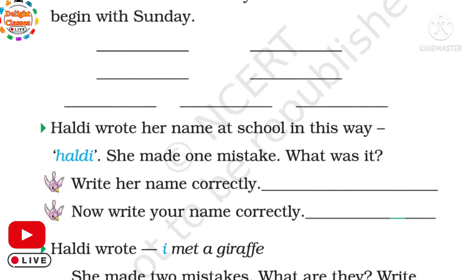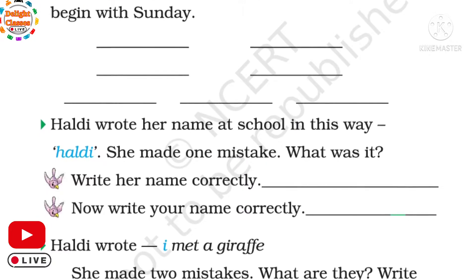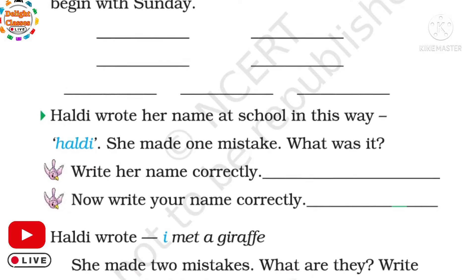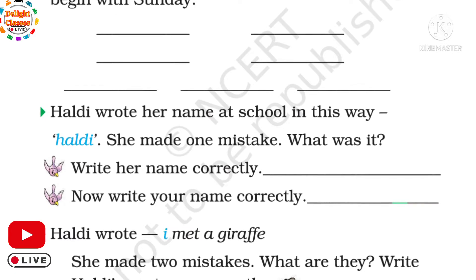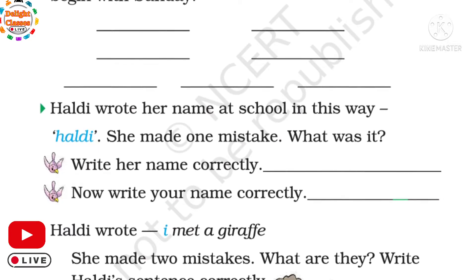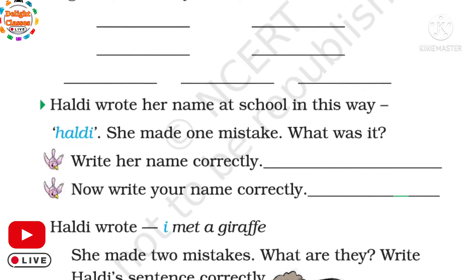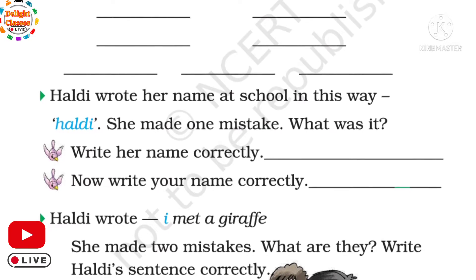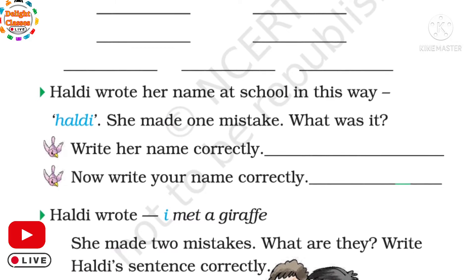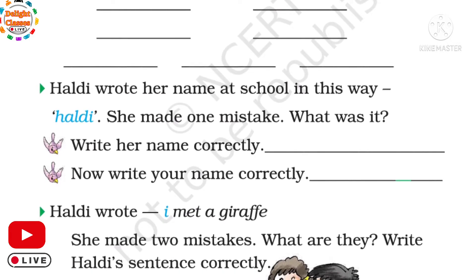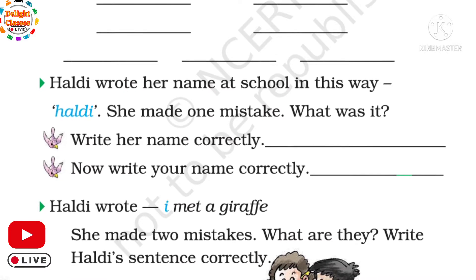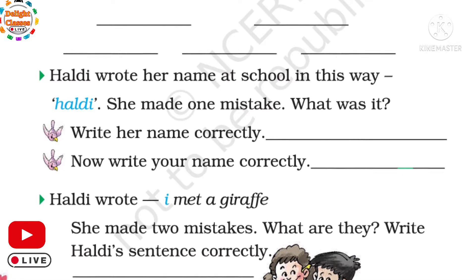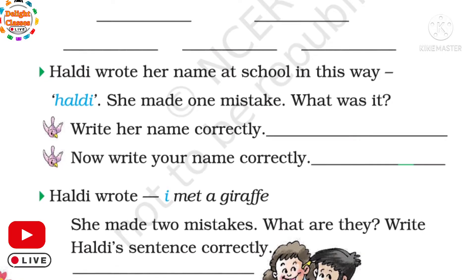Haldi wrote: 'I met a giraffe.' She made two mistakes. What are they? Write Haldi's sentence correctly. Here we have to write the sentence correctly. 'I' capital, met a giraffe — giraffe mein G kya hooga? Capital hooga. Giraffe ka G capital hooga.